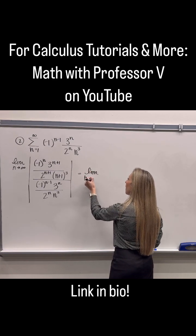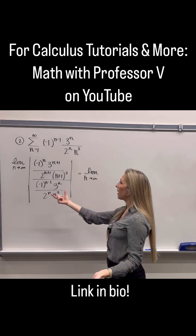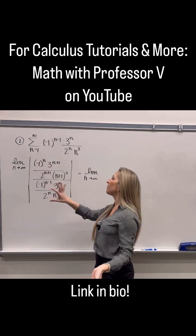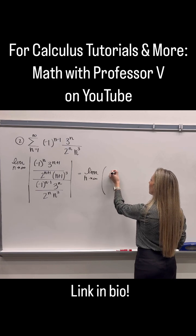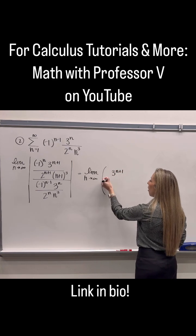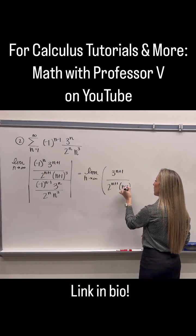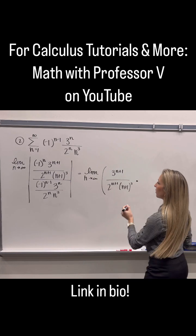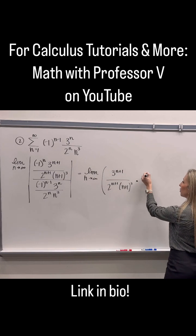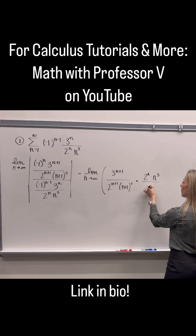So we've got the limit as n goes to infinity. Again, I don't need absolute value anymore now that I've made all these negative 1s positive, so I'm just going to switch to parentheses. I'm going to have 3 to the n plus 1 over 2 to the n plus 1 times n plus 1 cubed times reciprocal of the denominator, so we're going to have 2 to the n times n cubed over 3 to the n.